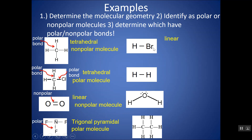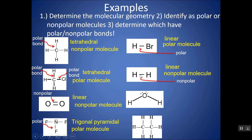HBr is linear — anytime you have two atoms, it's automatically linear. This is a polar molecule because there's an H on one side and a Br on the other, so it's asymmetrical. This is a polar bond because it's between two different elements with two different electronegativities. H2 would be linear as well. These happen to be two of the same element on either side, so it's symmetrical and thus a nonpolar molecule, with a nonpolar bond between two of the same element.